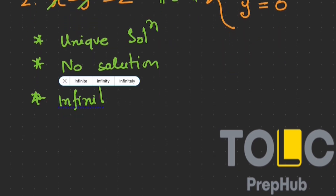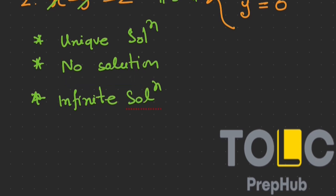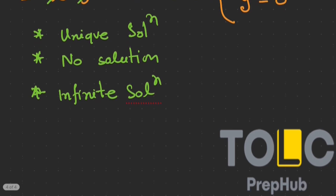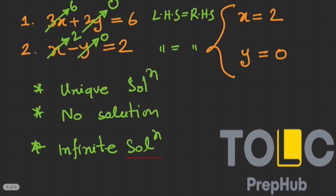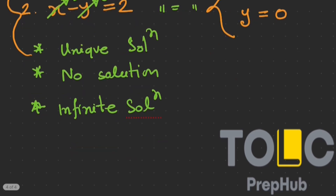There are three types of solutions — unique solutions, no solutions, and infinite solutions. When can we have a unique solution? The two equations I already gave as an example, equation one and two, are consistent solutions. They are intersecting at a point which is x equals 2 and y equals 0.